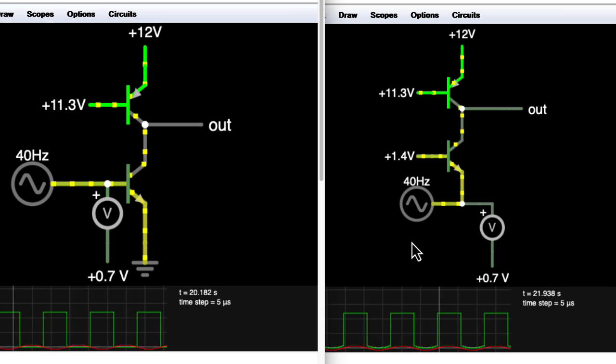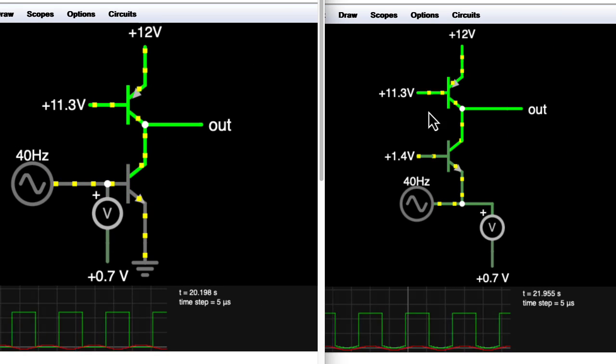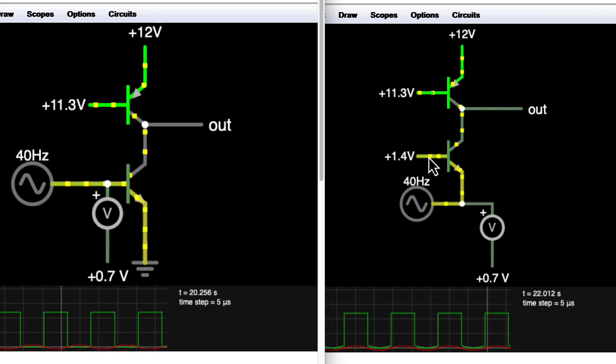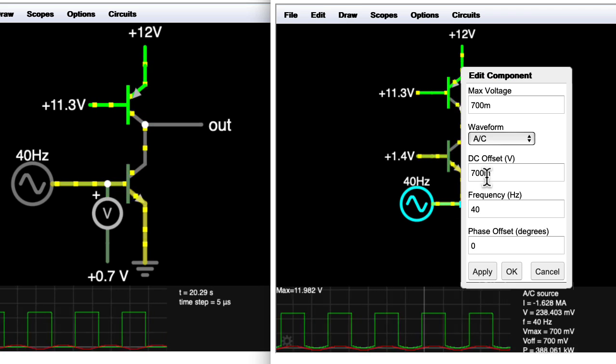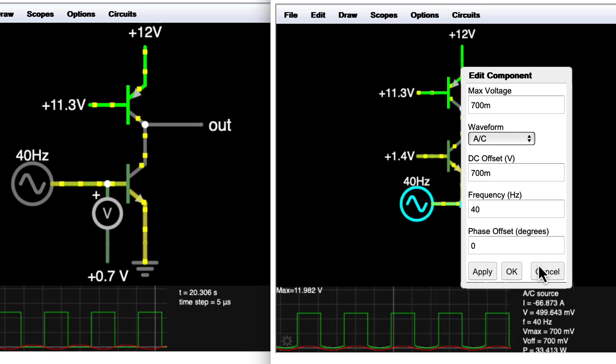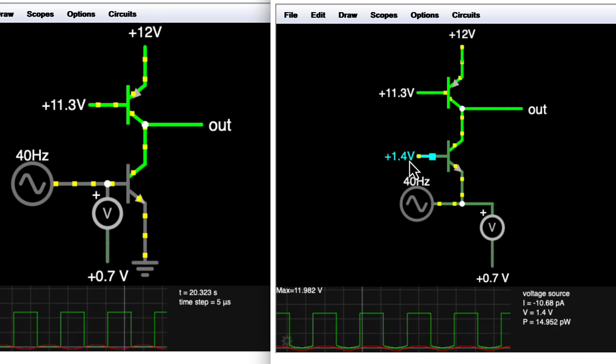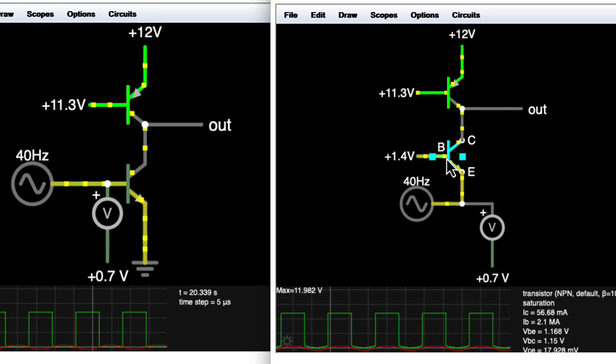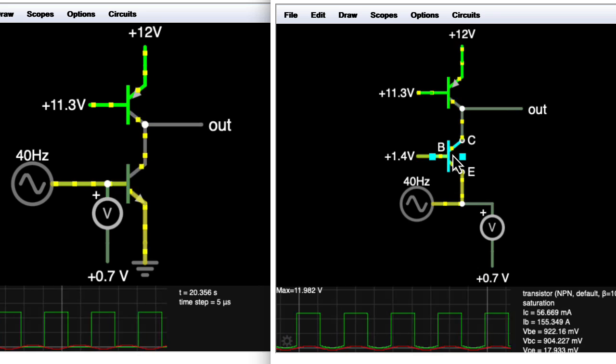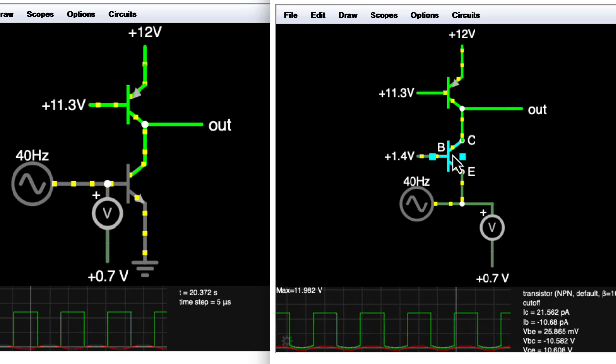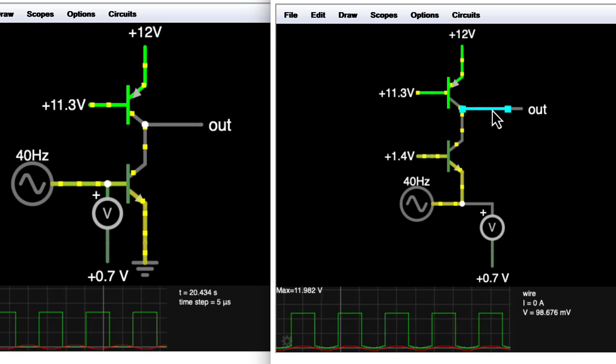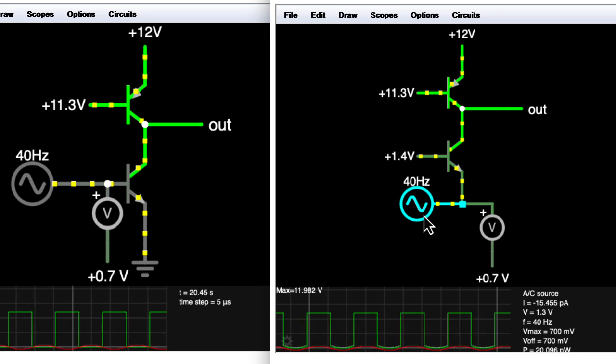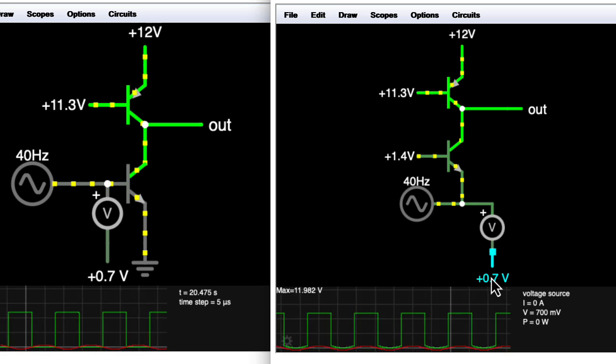Now, over here for the common base configuration, I need different bias voltages. I set this up so that the bias on the input is 700 millivolts. The bias on this base of this NPN transistor for the common base configuration is at 1.4 volts. And once again, I'm measuring the output as is, but I'm measuring the input referenced to 0.7 volts.